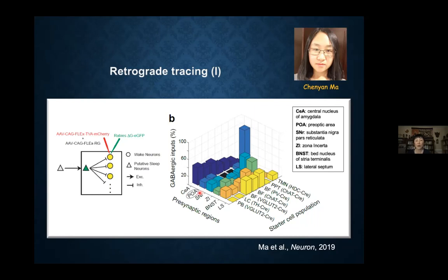Among the candidate regions, we did find the POA, consistent with the textbook version of how the POA promotes sleep. But to our surprise, the top candidate from this anatomical screening is actually the central nucleus of the amygdala, the CEA.